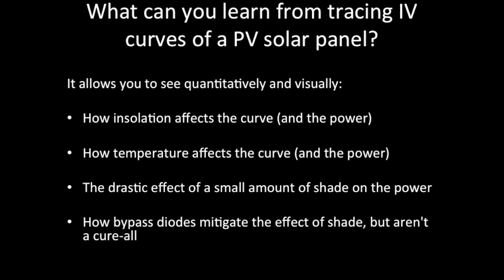What can we learn from tracing an IV curve of a photovoltaic solar panel? It allows you to see quantitatively and visually how the insolation — the amount of sun — affects the curve and the power. It lets you see how temperature affects the curve and the power. It also lets you see the drastic effect that a small amount of shade has on the power. I also talk about how bypass diodes mitigate that effect of shade, but don't completely cure things.